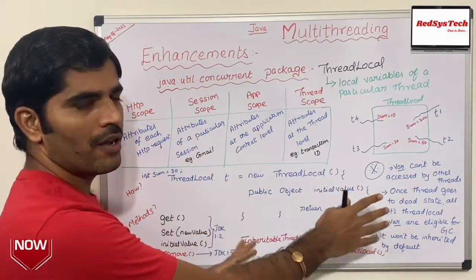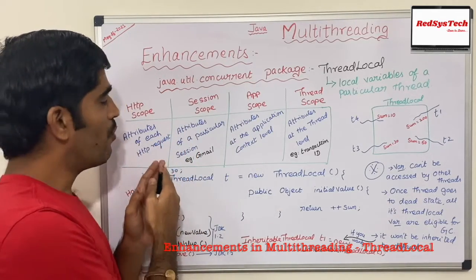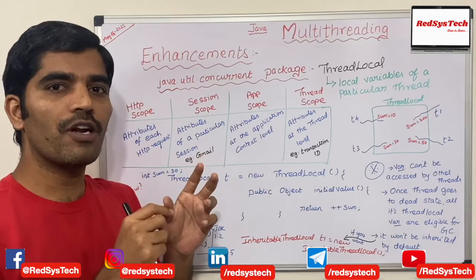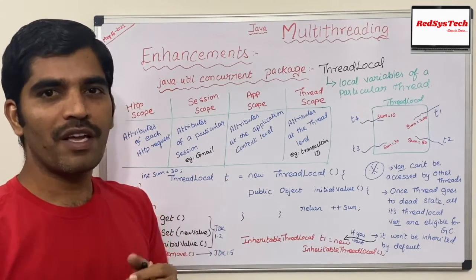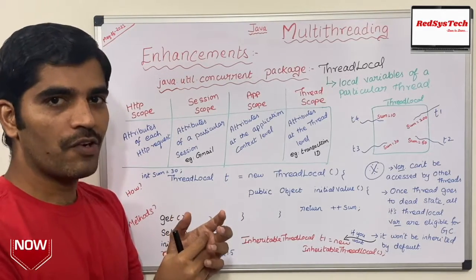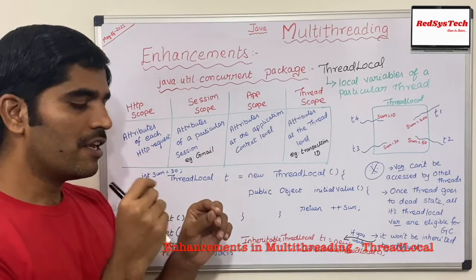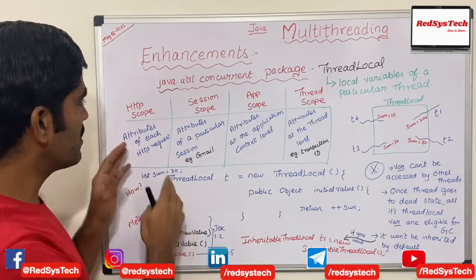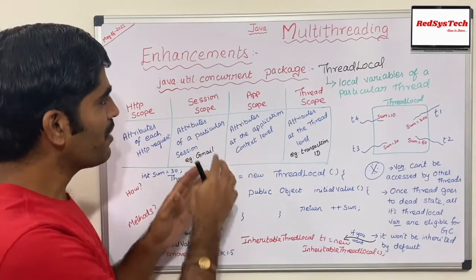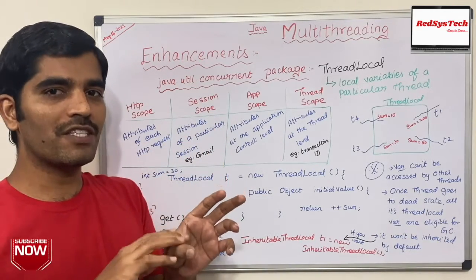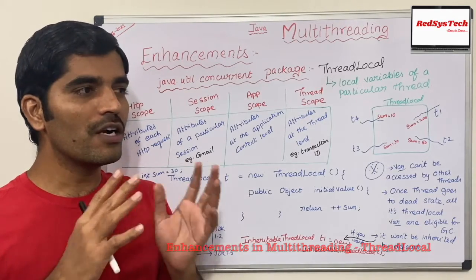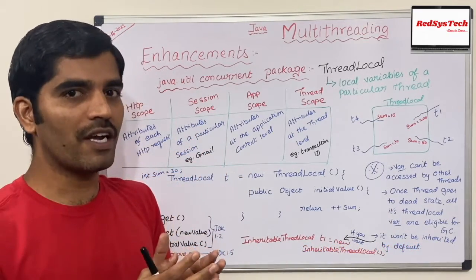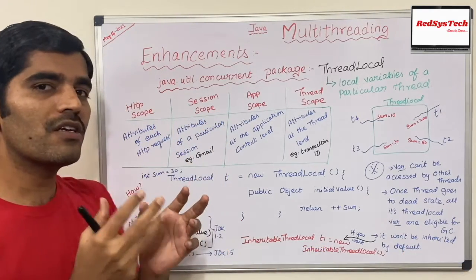Before going deeper into ThreadLocal, let me explain with some scenarios. You might already know what HTTP scope is. Whenever you send multiple requests to a server — say through Postman or a browser using GET, POST, or other methods — each request is a separate scope on the server. If I want to set some attribute or value for a particular key within each request, that is called HTTP scope. Similarly, for session scope: once a user logs in, they can do their activities, but whatever they do is valid only till the session is valid.